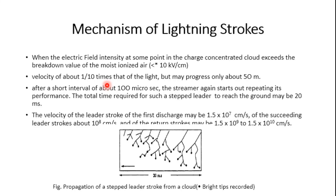We need to understand the mechanism of lightning strokes. Consider a cloud and the ground — the cloud consists of both positive and negative polarity charges. For our convenience, we consider the cloud as the region of negative polarity and the ground as having positive polarity, along with tall structures like trees or towers.